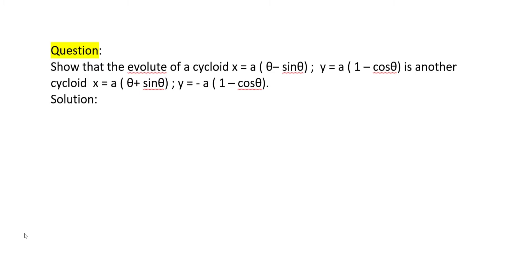The locus of the center of curvature is the evolute. So when we find the evolute, we first find the center of curvature. For the center of curvature, we need to find dy/dx and d²y/dx² first. Here x and y values are in terms of θ, so we use the parametric formula.